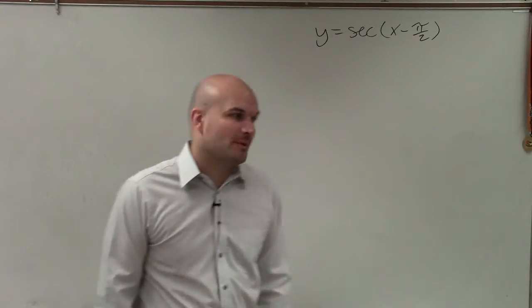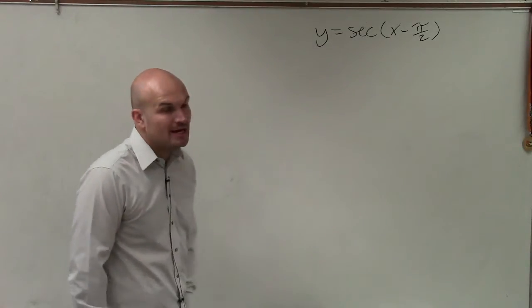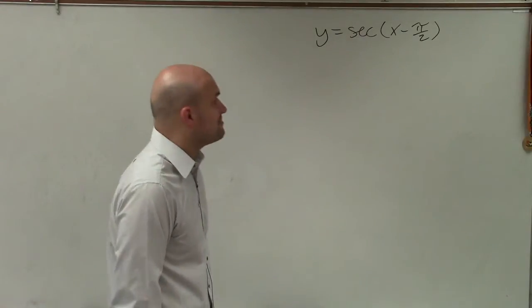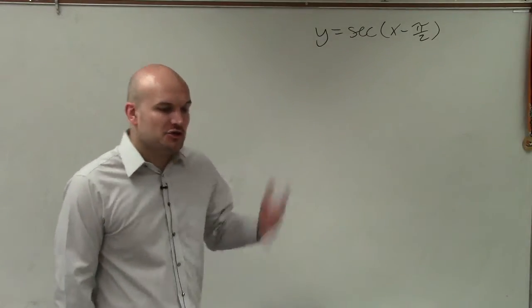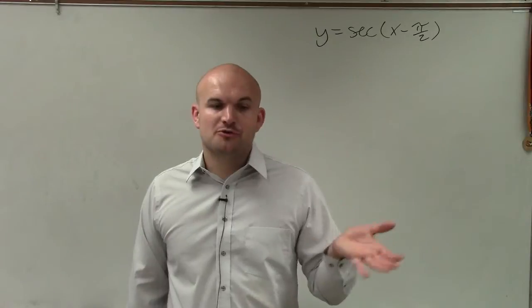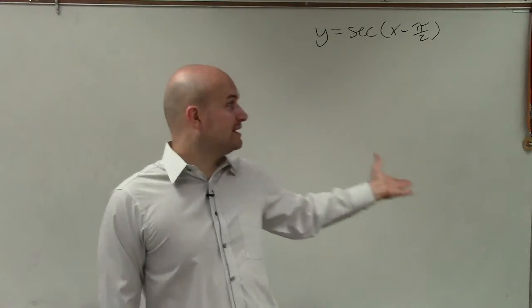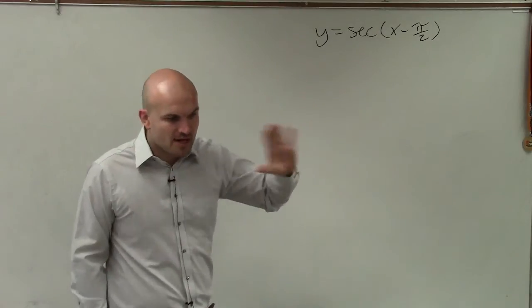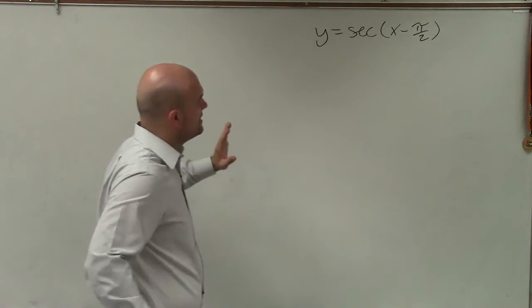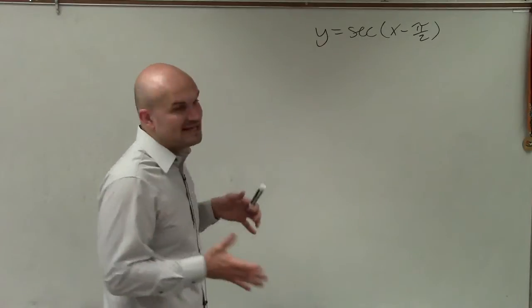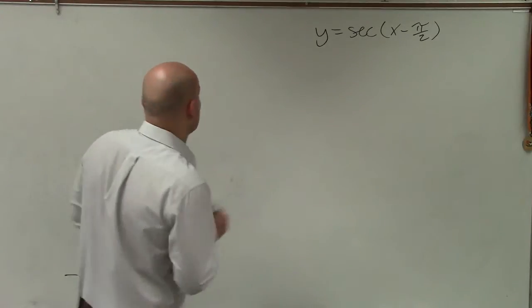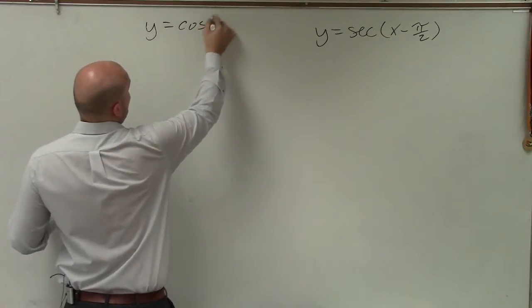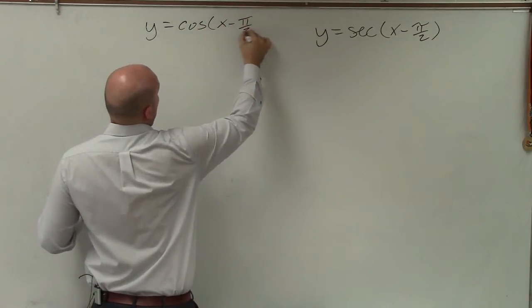And to graph this, what we're basically going to want to do is graph the reciprocal function, which would be y equals cosine of x minus pi halves, and then use that reciprocal function to be able to apply how to graph secant of x minus pi over half. So the first important thing that I think we want to look at is what exactly are the points.